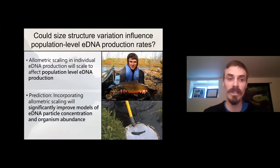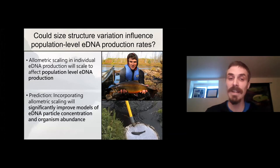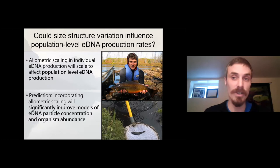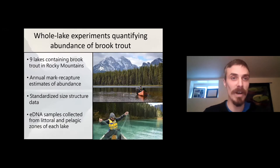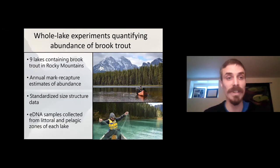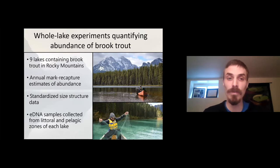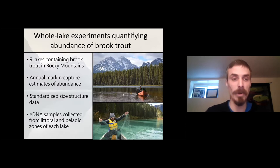We made the prediction that incorporating allometric scaling will significantly improve models of eDNA particle concentration and organism abundance in nature when size structure variation occurs among populations. To test this hypothesis, we conducted whole-lake experiments where we quantified the abundance of brook trout in nine lakes in the Rocky Mountains. We did this using annual mark-recapture techniques to get an estimate of abundance.